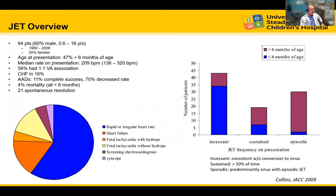They had 94 patients, with dates ranging from 1969 to 2008. Twenty percent were familial. Age of presentation: 47% were under six months of age. The median rate at presentation was about 210 beats per minute, ranging from 136 to 320. Fifty-six percent had one-to-one VA association. Congestive heart failure was relatively common, making up 16% of presenting symptoms. Antiarrhythmic medications achieved complete success in 11% and decreased the rate in 70%. Overall mortality was 4%, all in those diagnosed at a young age. Twenty-one percent had spontaneous resolution.